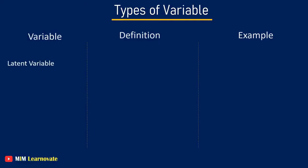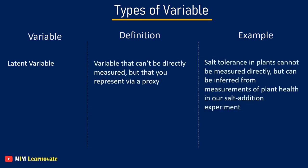Latent variable. A variable that can't be directly measured but that you represent via a proxy. For example, salt tolerance in plants cannot be measured directly but can be inferred from measurements of plant health in our soil field experiment.